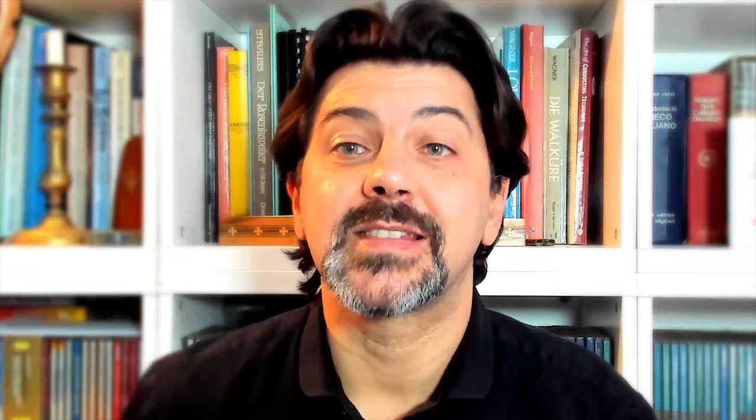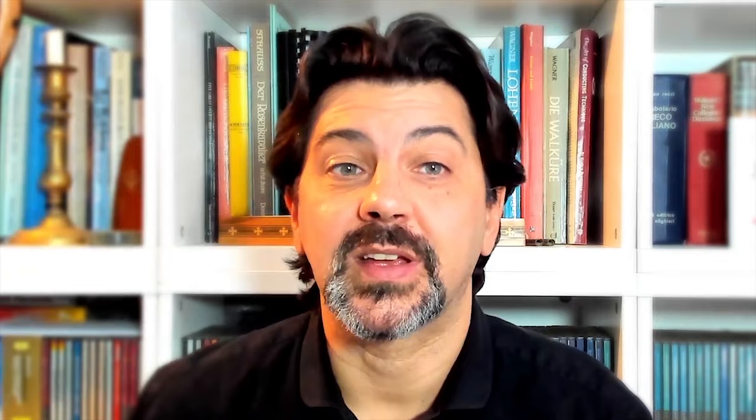The movement starts with a very rhythmic theme in an exuberant G major, insisting on a cell that will be the backbone structure of the entire movement. Only 8 bars later, we hear a very lyrical theme. Notice how underneath, the rhythmical cell serves as an accompaniment. The end of the phrase brings back the rhythmic cell in the foreground, with an arpeggio in the key of the dominant, and the repeat takes us back to the beginning.